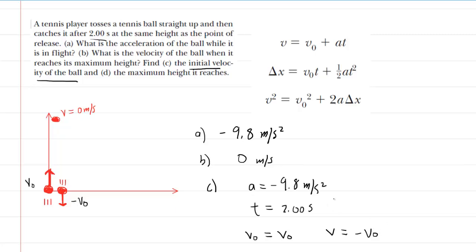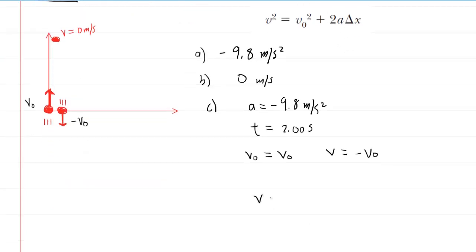So with those values, it turns out we're going to be able to use this first equation from kinematics to help us solve this. So let's write that down again. We have V final is equal to the initial velocity plus acceleration times time. Now, the final velocity again was negative V0. The initial velocity was V0. The acceleration, negative 9.8.